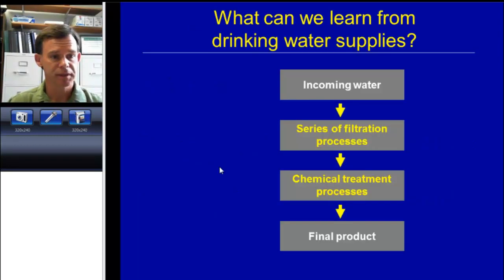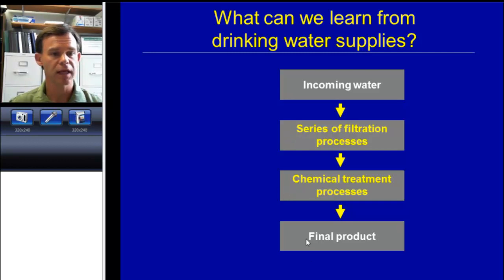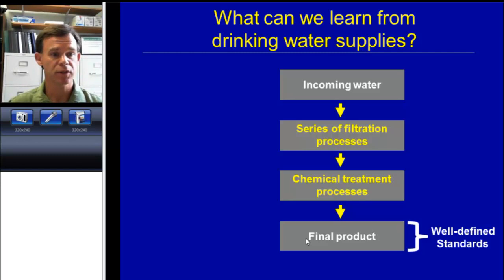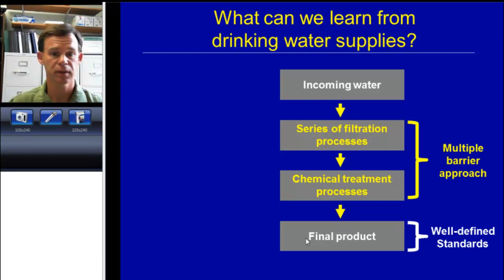We want to sit back and think: why are some of these water treatment systems failing? Probably the best starting point is looking at municipal drinking water supply. They have some incoming water, a series of filtration processes and chemical treatment, and then a final product that's delivered through the piping to the household. There are some features about this process that we can apply to horticultural irrigation water. One of them is that the final product has well-defined standards in terms of coliform units and pathogen presence, and contaminants such as inorganic and organic molecules. There's also a principle in water treatment called a multi-barrier approach — we don't rely on just one technology to get complete sanitation of our water.